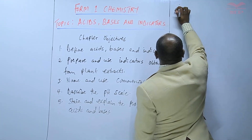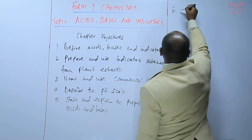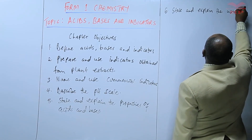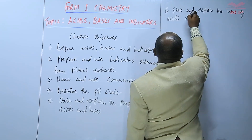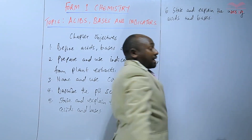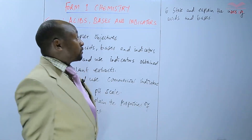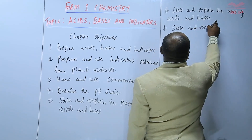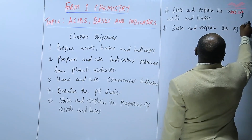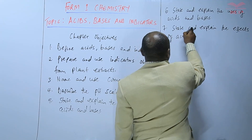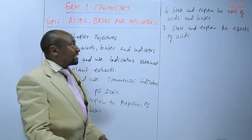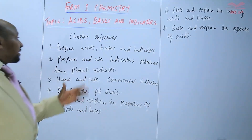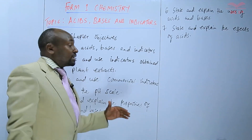Objective number six: we should also be able to state and explain the uses of acids and bases — where do we use acids and bases in our day-to-day lives. And then lastly, we will be able to state and explain the effects of acids — how do acids affect us in our day-to-day lives and also how do they affect the atmosphere. So basically, those are the seven objectives we'll go through in this particular topic.